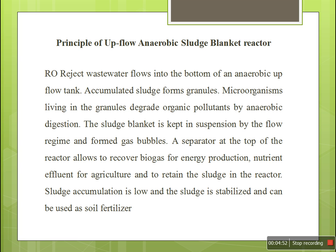The principle of the upflow anaerobic sludge blanket reactor: the originating wastewater flows into the bottom of the anaerobic flow tank by means of a peristaltic pump. The acclimated sludge forms granules. Microorganisms degrade the organic pollutants by anaerobic digestion. The sludge is kept in suspension by the flow regime and formed gas bubbles. The separator at the top of the reactor allows conversion of biogas for energy production, nutrients, and effluents for agriculture, while retaining the sludge in the reactor.